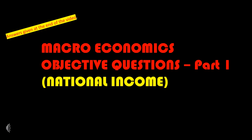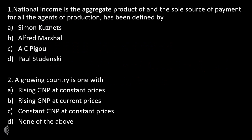Welcome to the video: MCQs Based on National Income, Part 1. Question No. 1: National income is the aggregate product of and the sole source of payment for all the agents of production — has been defined by?